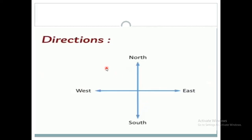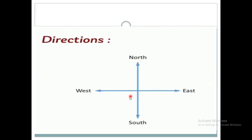Basically, there are four directions. They are north, west, east, and south. These four directions are used by people to locate any places.